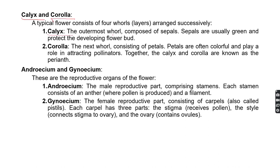Calyx refers to the sepals, which are usually green in color and protect the developing flower bud. Corolla is present inner to the calyx and refers to the petals, which are colorful. The role of the petals is to attract pollinators. The calyx and corolla together are known as the perianth.